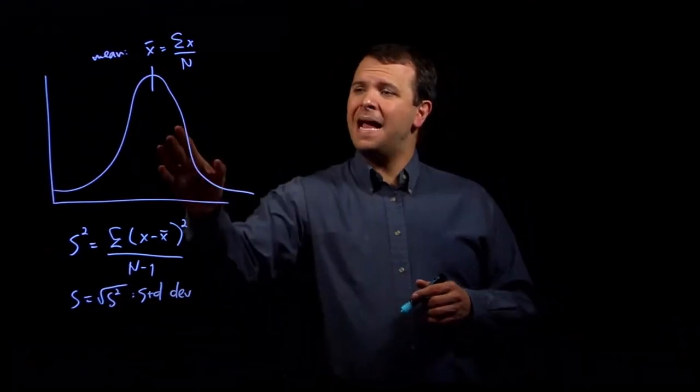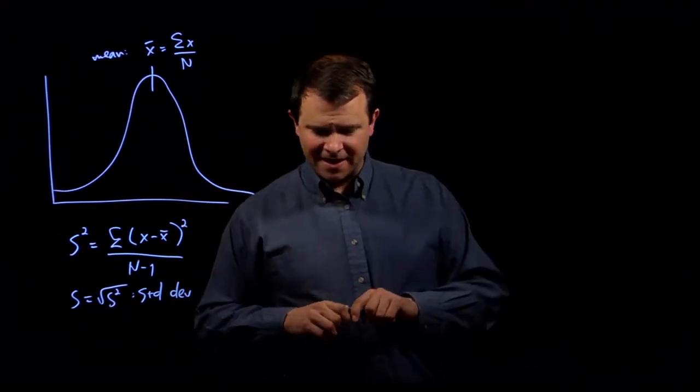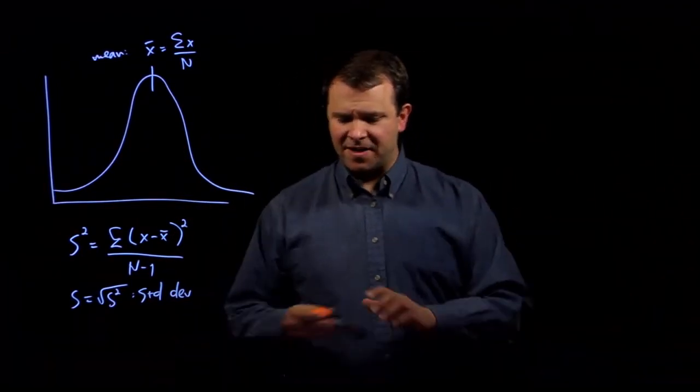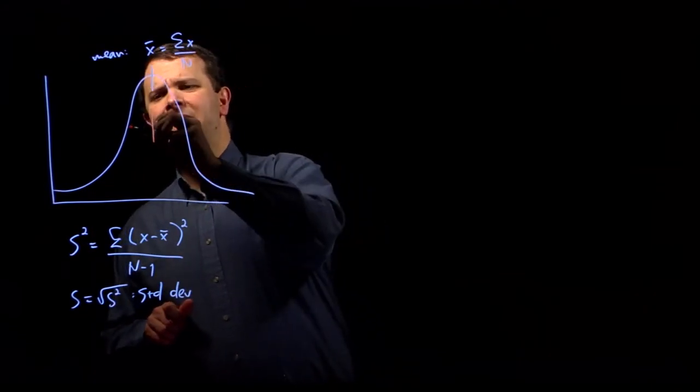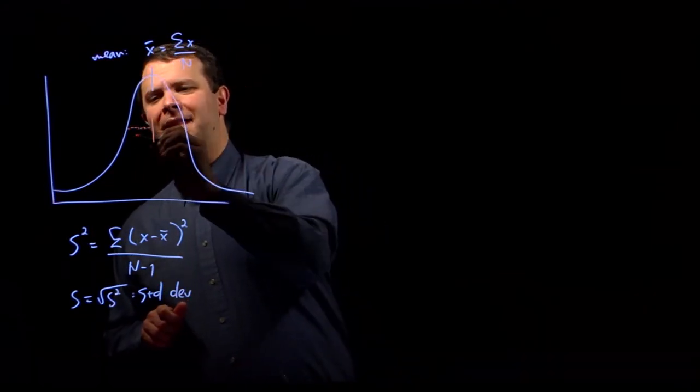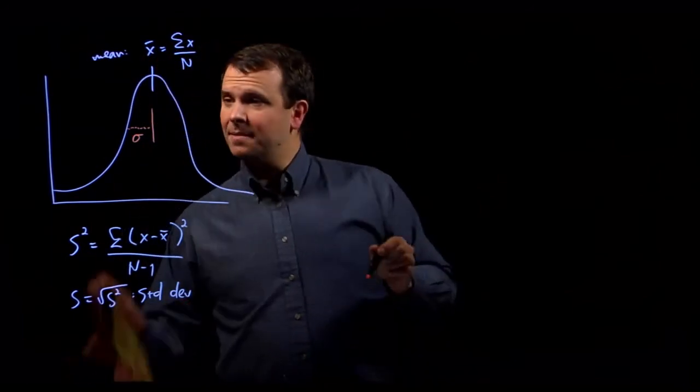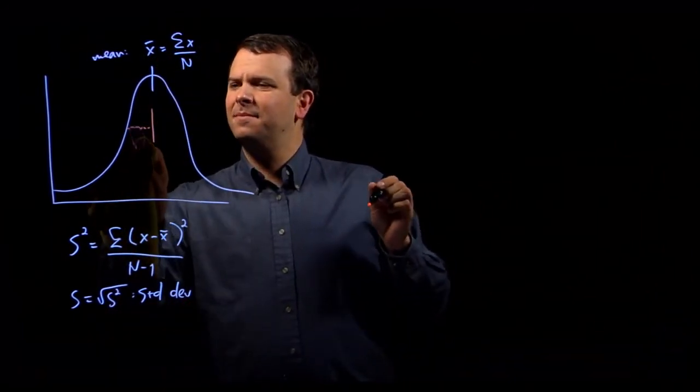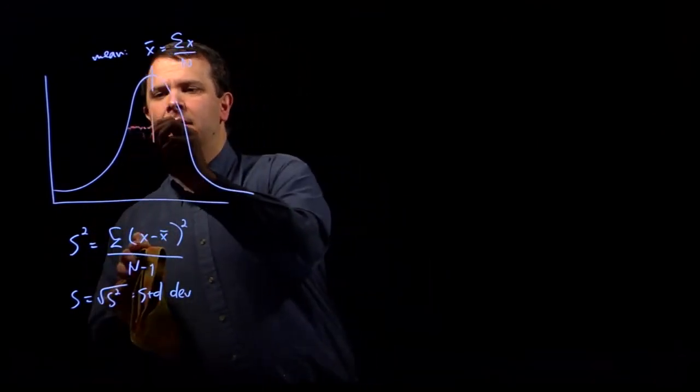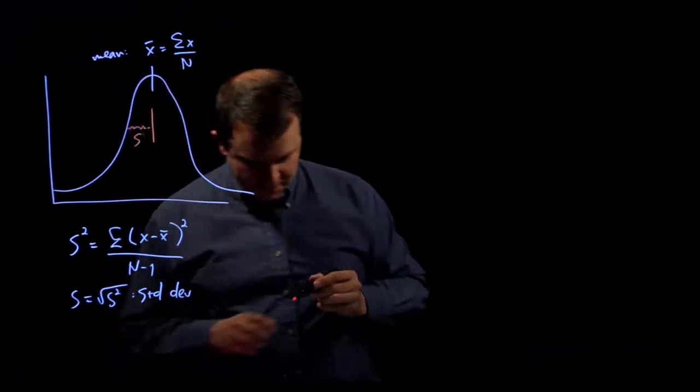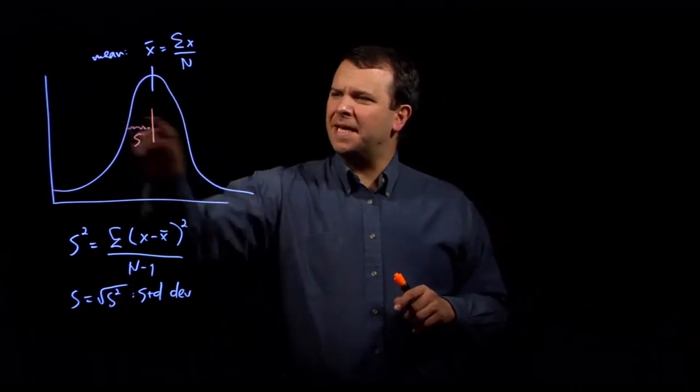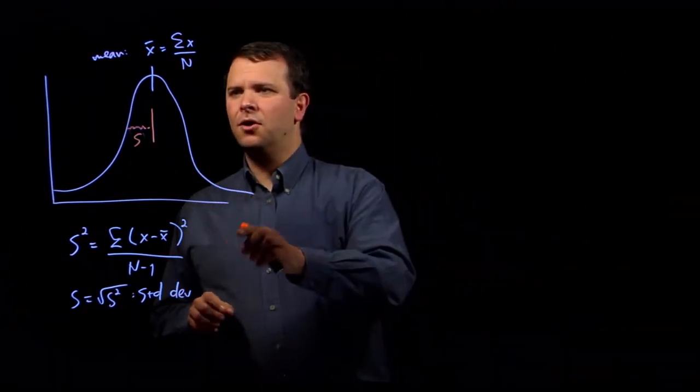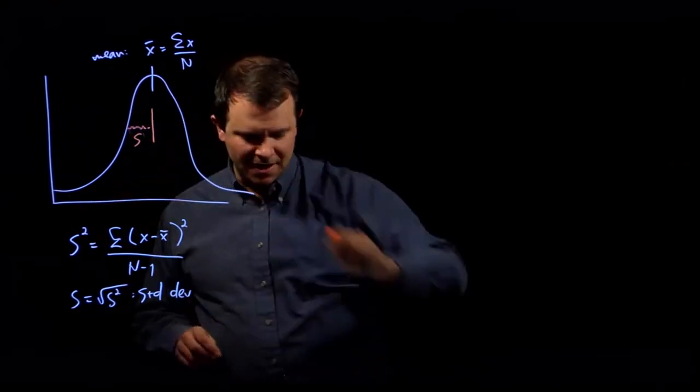Graphically, if you have a normal distribution like this, then the standard deviation is the distance from the mean to kind of this inflection point. I should use s instead of sigma. We'll come back to sigma here in a moment. So this kind of inflection point right here where the curve goes from concave to convex.